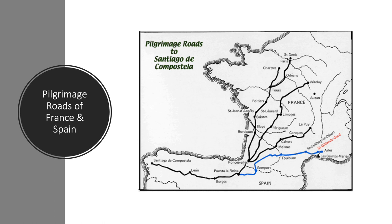People who went on pilgrimage routes donated large amounts of money to churches, so churches began competing for financial donations. The Romanesque successors of the Ottonians were the Salians — Frankish rulers who controlled present-day Germany and the Lombard region of Italy. Like their predecessors, the Salian emperors were important patrons of art and architecture, although the monasteries remained the great centers of artistic production, particularly for manuscript illumination.